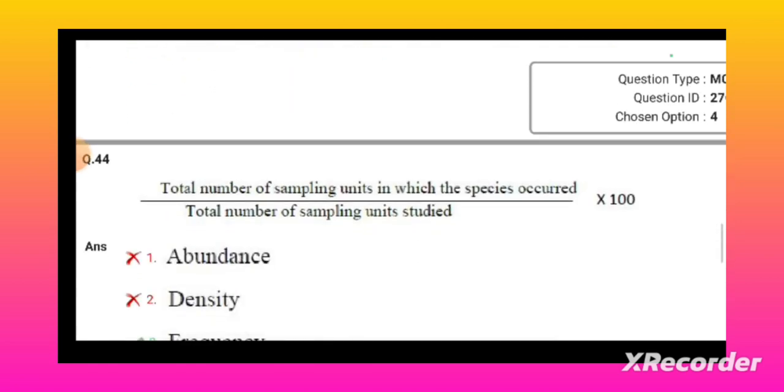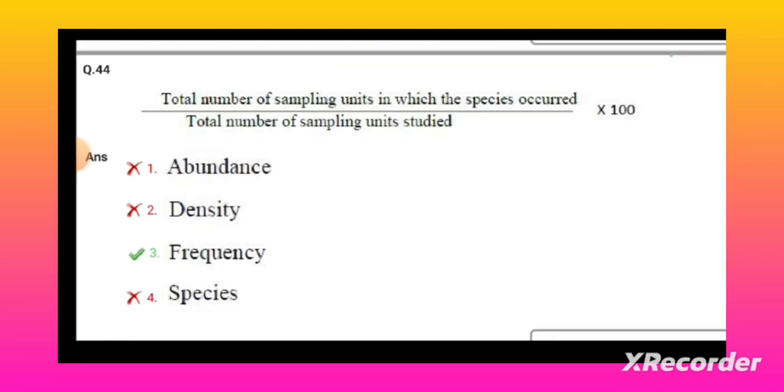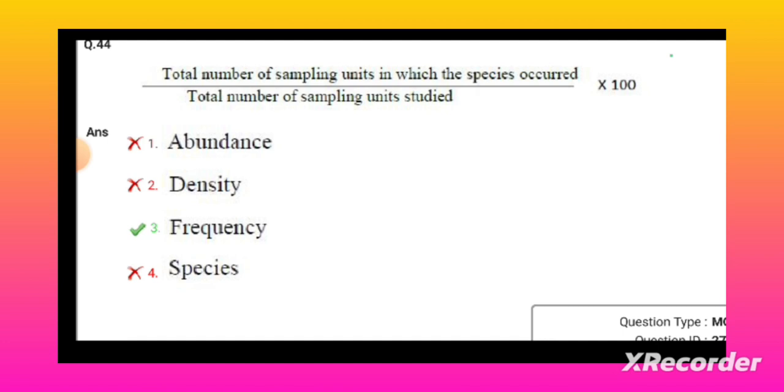The total number of sampling units in which the species occurred divided by total number of sampling units studied times 100 - this is the formula of frequency.